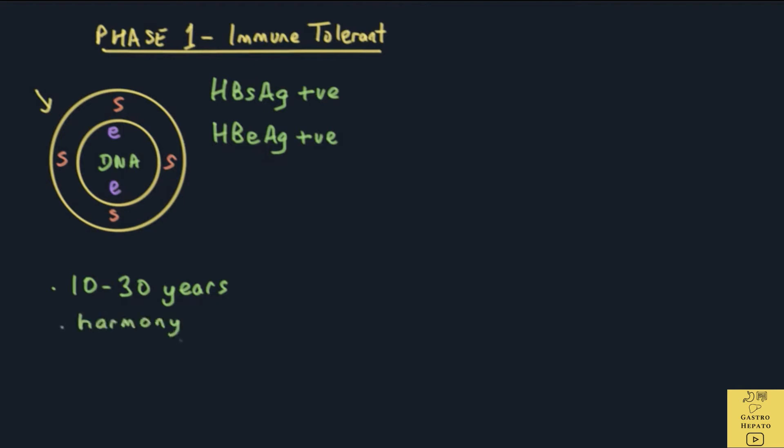In Phase 1, the genetic material of the virus, namely the DNA, is protected by the body's E and S proteins. Although the virus is multiplying, it does not cause any liver damage. In this phase, the HBV DNA levels are very high. However, the blood ALT level is normal, indicating little or no liver damage.